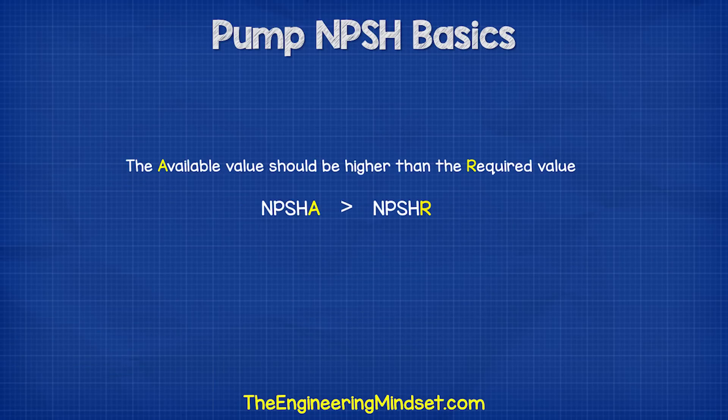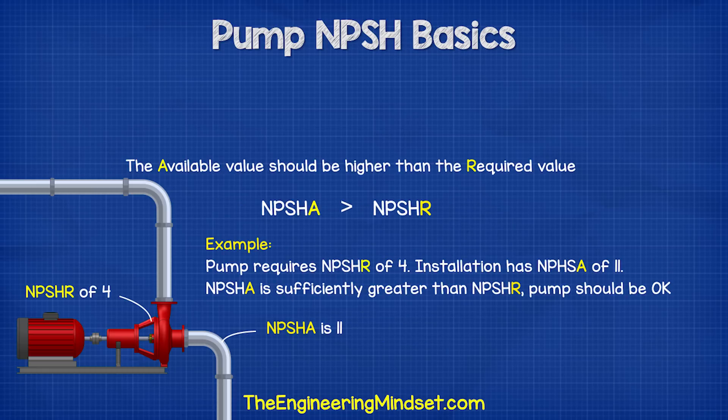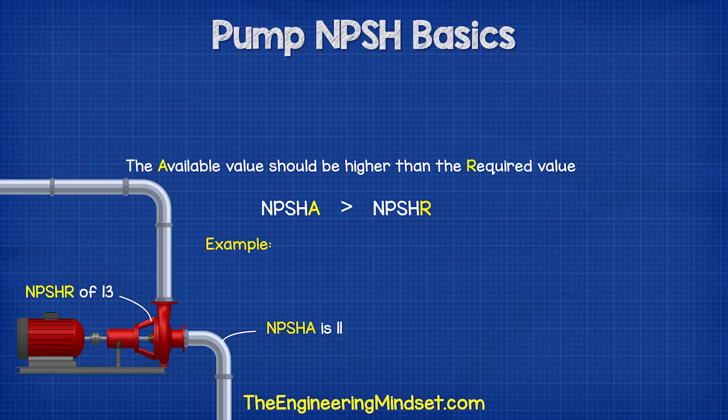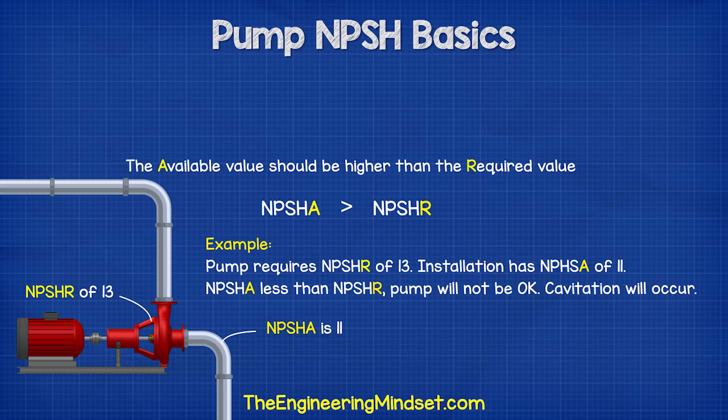The available pressure should always be higher than the required value. For example, if we have an installation and we calculate the NPSH-A as 11, but the pump requires an NPSH-R of 4, then the pump should be okay. However, if we installed a pump that required an NPSH-R of 13, then the available NPSH is insufficient and cavitation will occur.